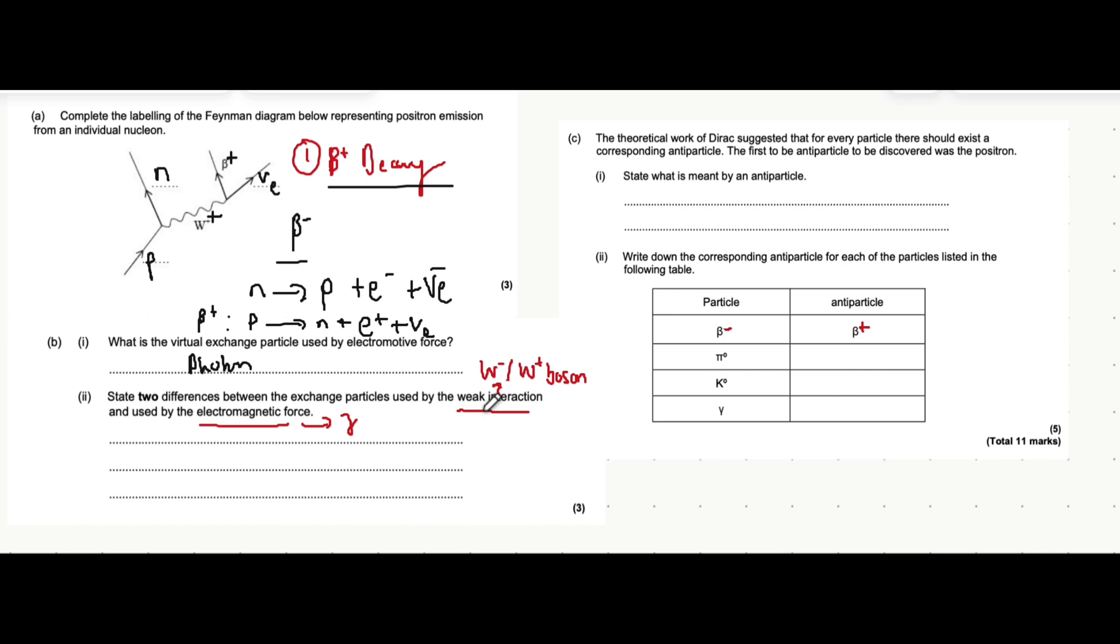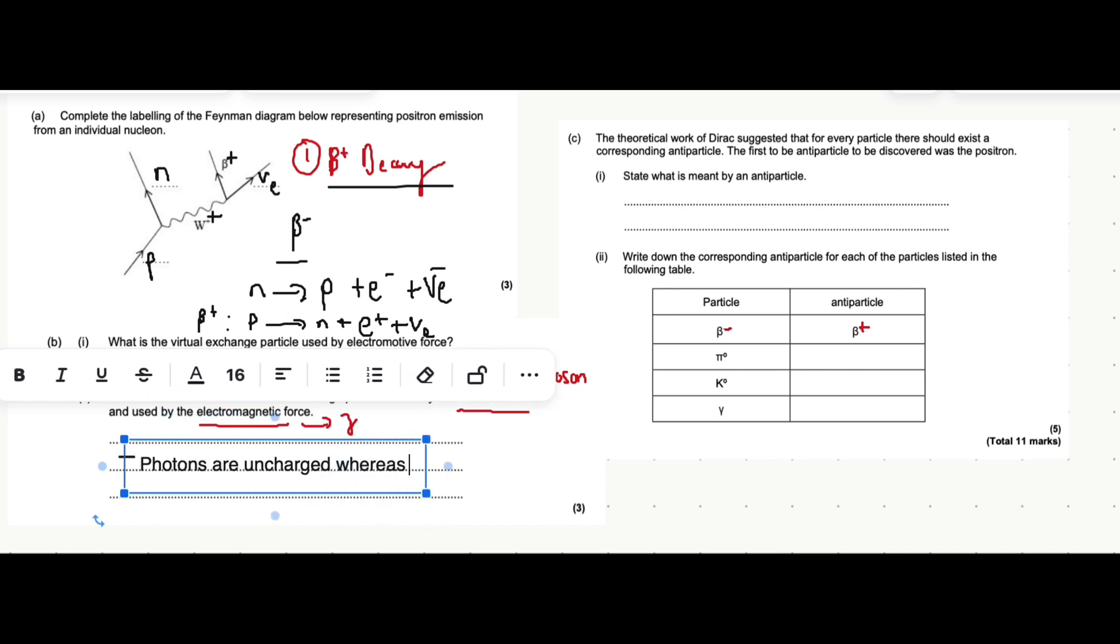Let's take two differences between the exchange particles used by the weak interaction, which I've labeled as W minus or plus boson, and the electromagnetic force. So you might already be able to see one. The fact that these can be charged whereas this is uncharged. What we can say is that photons are uncharged whereas W bosons are charged particles.